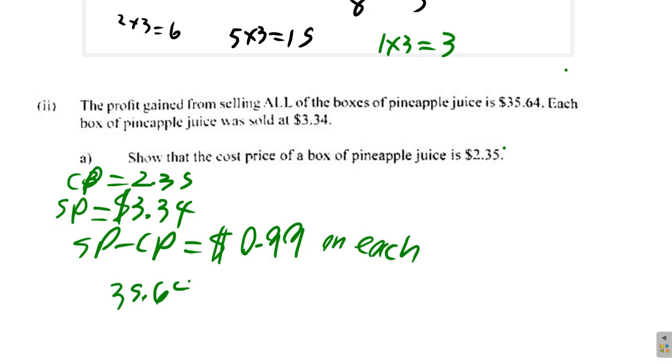$35.64 divided by $0.99 is equal to, so $35.64 over $0.99 equals $36. So it's 36 boxes.